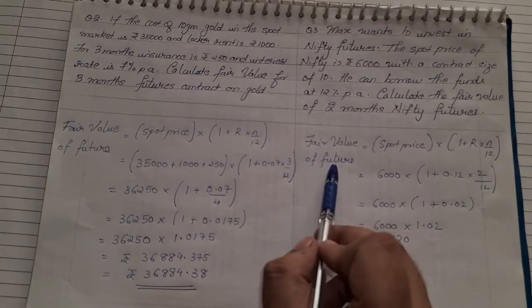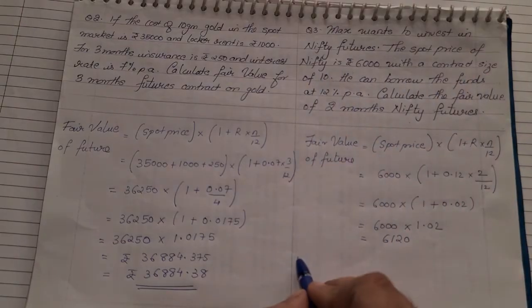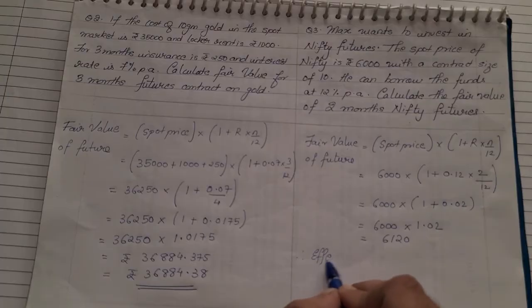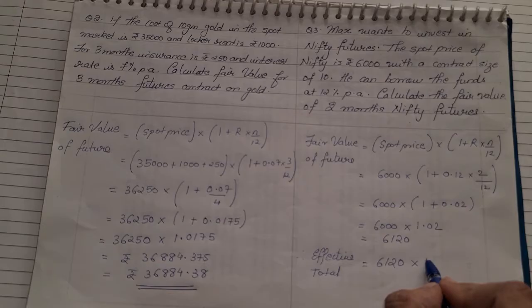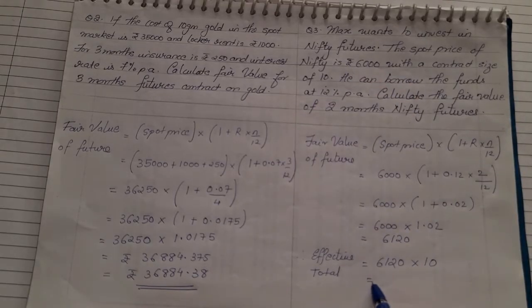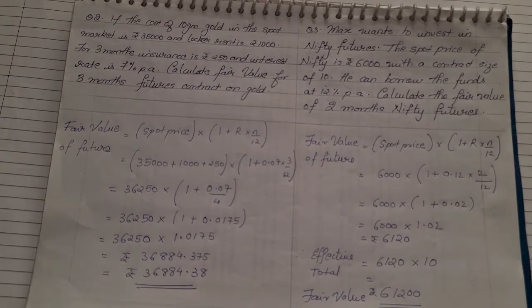Multiplying gives ₹6,120 — this is the fair value of the future for one contract. However, the contract size is 10, so the effective total fair value = 6,120 × 10 = ₹61,200. These are the three sums based on calculation of the fair value of futures using simple interest.